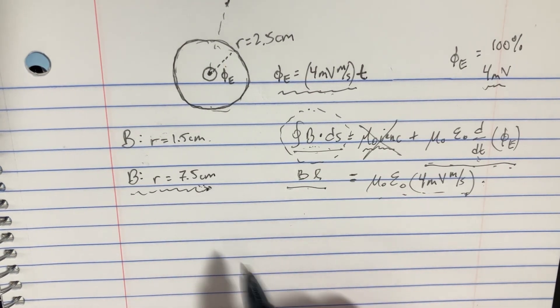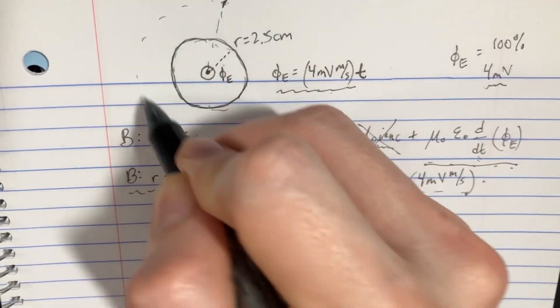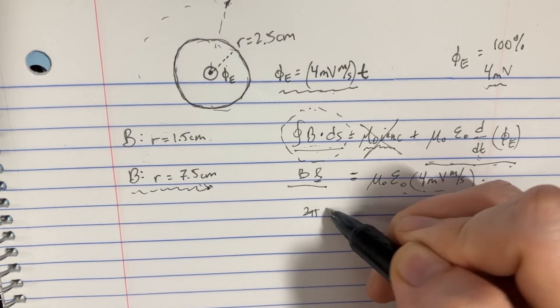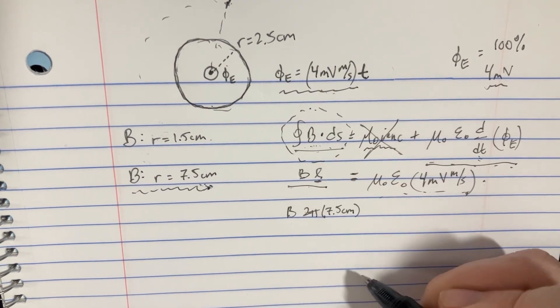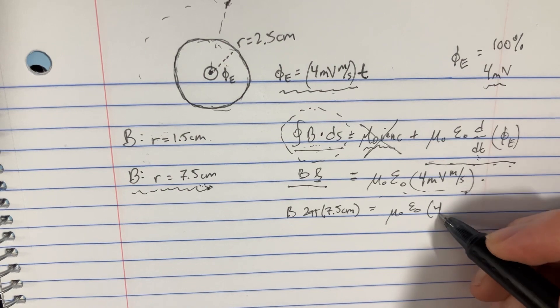let's go over here and try to solve this. What's the length? If we're out here, the length is the circumference. So it's 2 pi r, and r is going to be 7.5 centimeters. And then we have the B. And then over here, we have the mu naught, epsilon naught, 4 millivolts.